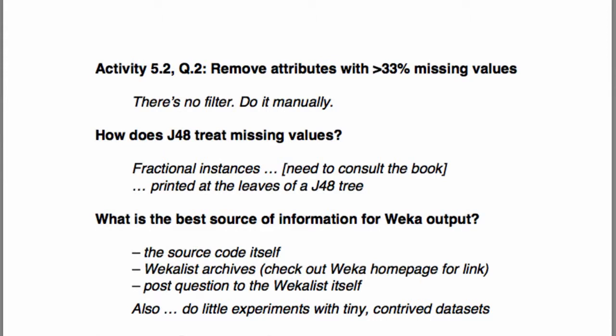Which brings us to the next point. Someone asked how J48 treats missing values. That's a very good question and the answer isn't quite so easy. You can read about it in the book, but the basic idea is: suppose you're going down a decision tree and you have to take a branch that depends on the value of an attribute, and that value is missing. What J48 does is send a certain fraction of the instance down one branch and another fraction down another branch. Throughout the tree you're dealing with fractional instances. That's why when you see a J48 tree on your screen, the leaves sometimes show a fractional number of instances — that's caused by those missing values.